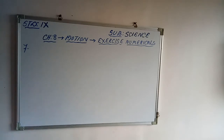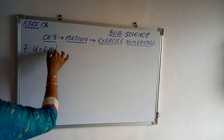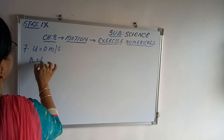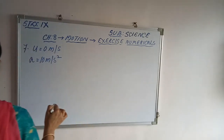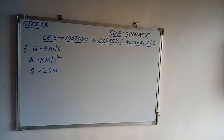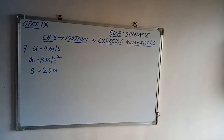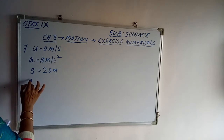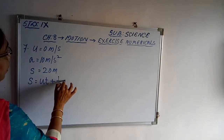What is given: initial velocity U = 0 m/s. Acceleration A = 10 m/s². Distance S = 20 meters. First, find the time using the position-time relation: S = ut + ½at². So 20 = 0×t + ½×10×t² = 5t².